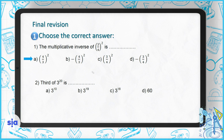Question 2: what is one-third times 3 to the power of 20? One-third is 3 to the power of negative 1, times 3 to the power of 20. When we multiply with the same base we add the powers, so negative 1 plus 20 gives 3 to the power of 19. The right answer in question 2 is choice B.